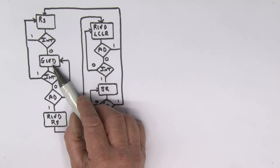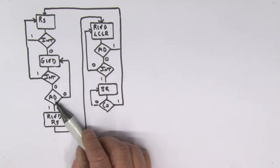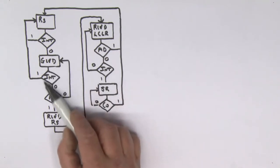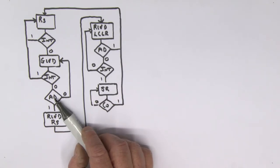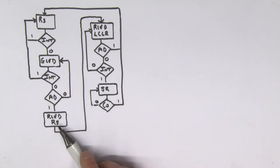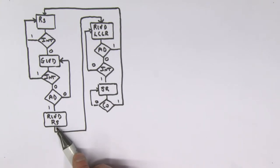If we're in this state — all doors and windows closed — we look at the arm/disarm signal. If it's zero, we loop in that state. If we arm the system (via a key), the SR latch output becomes one, which is the input AD to my state machine, and that moves us into the next state. We now have the red LED on and we reset the SR latch so we can use the switch again for disarming.